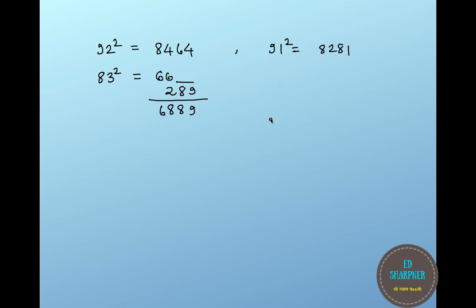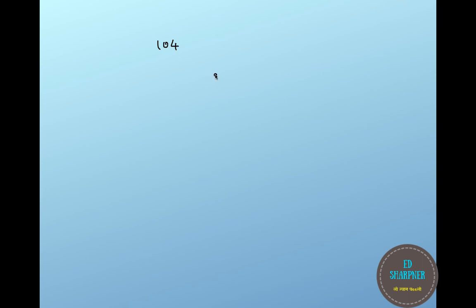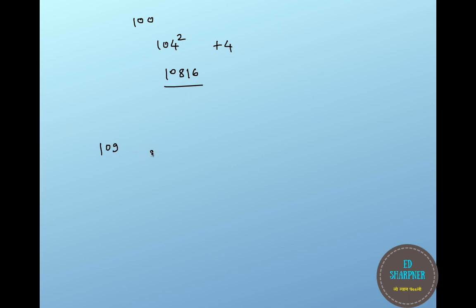Now let's look at numbers which are more than 100. Let's say 104. Every square of a digit more than 100 will be more than 10,000. We look at the difference from the primary base, which is plus 4. Because it is plus 4, we add 4 to 104 to get 108. Then put the square of 4, which is 16, after that. So 10816 is the square of 104.